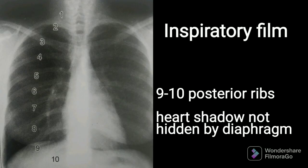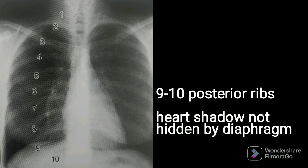Talking about an inspiratory film: we have 9 to 10 posterior ribs which will be easily visible, and the heart shadow is not hidden behind the diaphragm. These two are the features of an inspiratory film.